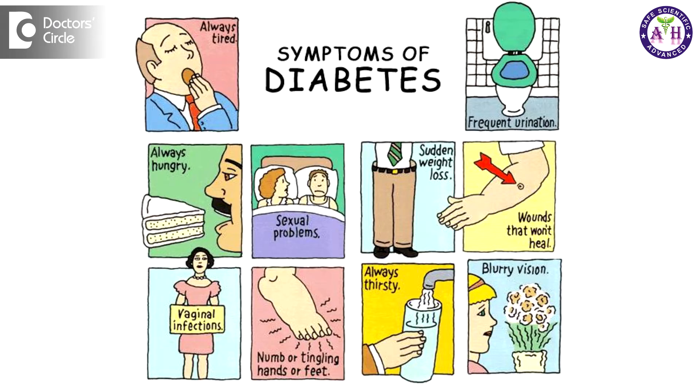Unilateral leg pain — that is pain of one leg, and that also during sleep — can happen in a few kinds of conditions. One is it is seen in diabetes, where the nerves are affected, and it can also be seen in conditions where the nerves are directly affected.